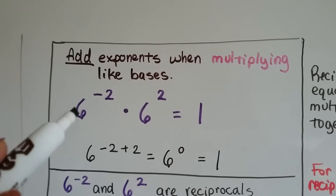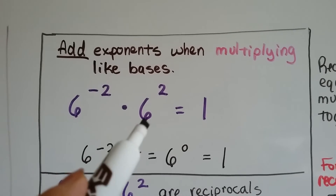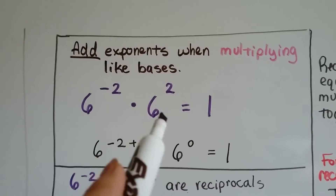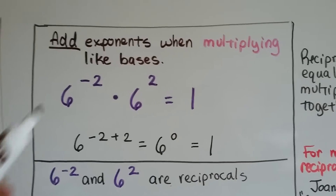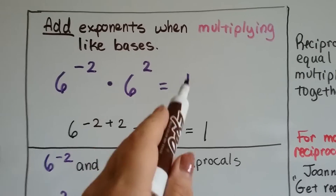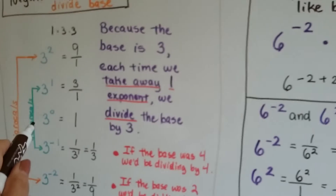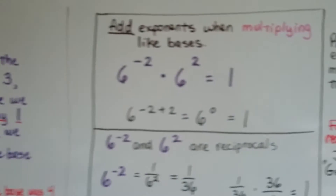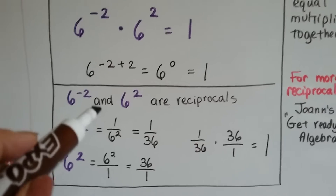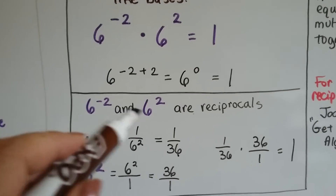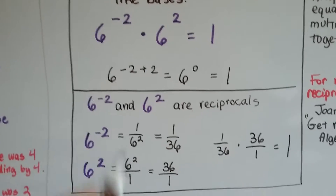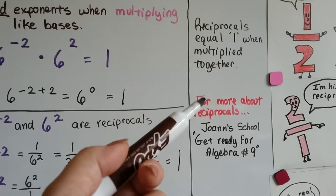Take a look at these two. We've got 6 to the negative 2nd power multiplied by 6 to the 2nd power. Remember when we were multiplying the bases, we added the exponents? Well, negative 2 plus 2 equals 0, so this would equal 1. If we have negative 2 as an exponent and a positive 2 as an exponent with the same base, they're really reciprocals of each other because they equaled 1 when multiplied together. That's the definition of a reciprocal.